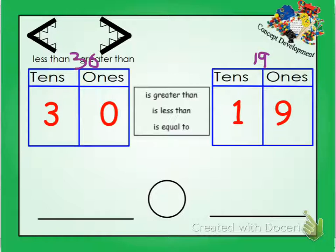So remember, whenever we're looking or reading numbers, we always look at the tens from left to right. So in this case, we're looking at the tens place. So 30 has 3 tens and 19 has 1 ten. Oh, well, we know that 3 tens is bigger than 1 ten.